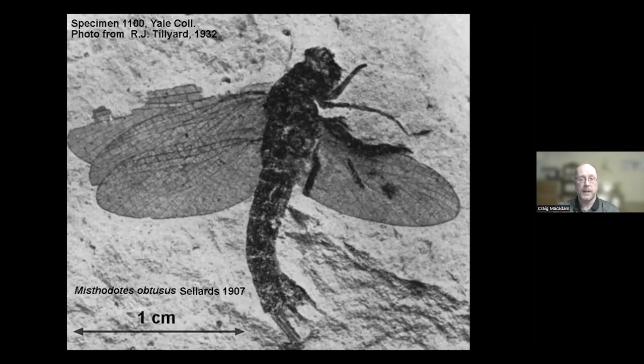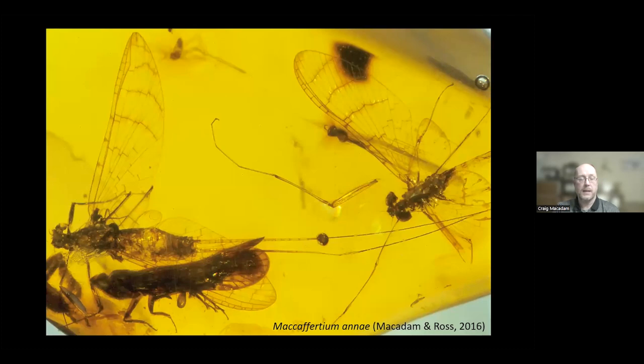Moving forward to the Miocene period, about 15 to 20 million years ago, this piece of amber has trapped two mayflies and a bug at the bottom. These are a male and a female mayfly found in an amber bed in Mexico. It's fairly unusual to get both sexes in one piece, and the amber preserves detail that you just can't see in normal rock fossils.